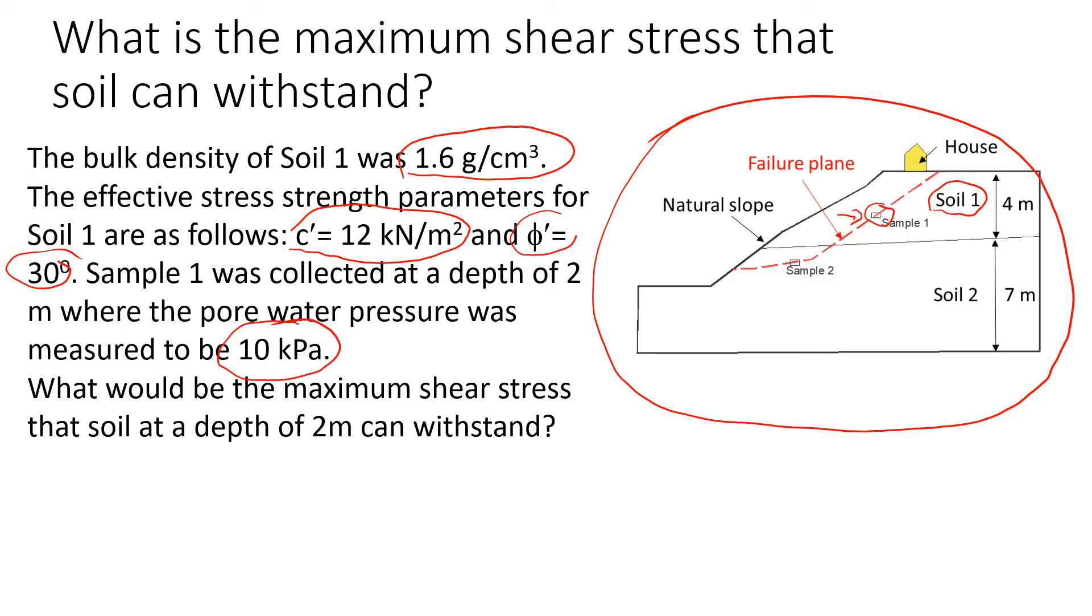It's actually pretty simple. What we need to know is the Mohr-Coulomb failure criteria, which is described as shear stress at failure equals normal stress times tangent of friction angle plus cohesion.